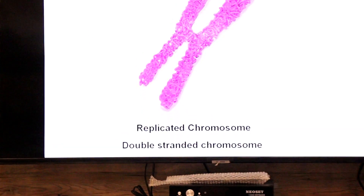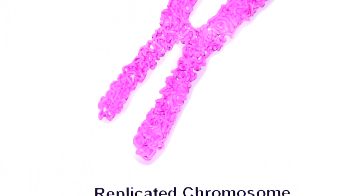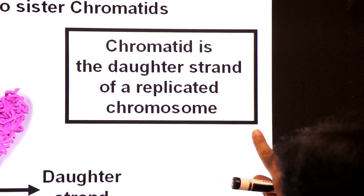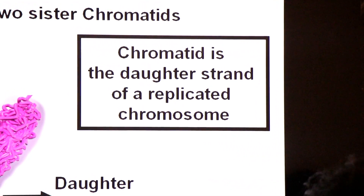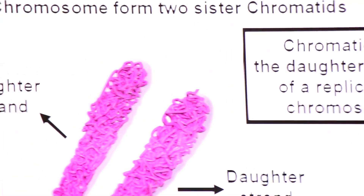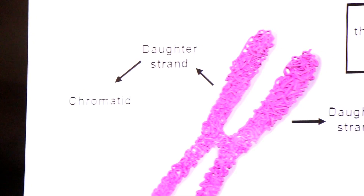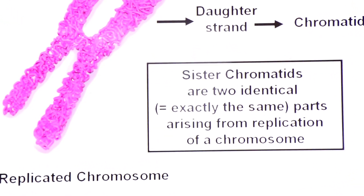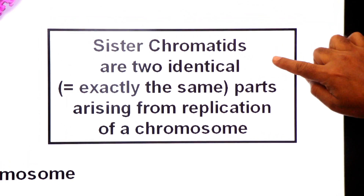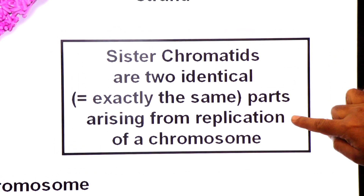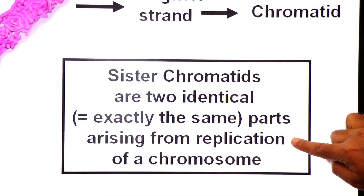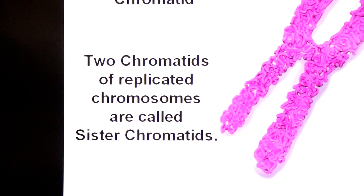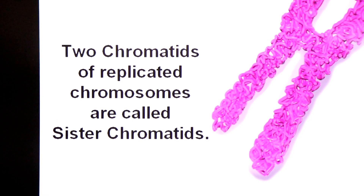In a replicated chromosome, one strand is one chromatid, and the other daughter strand is the second chromatid. A replicated chromosome is a double-stranded chromosome. Chromatid is the daughter strand of a replicated chromosome. Sister chromatids are two identical — exactly the same — parts arising from the replication of a chromosome. The two chromatids of a replicated chromosome are called sister chromatids.